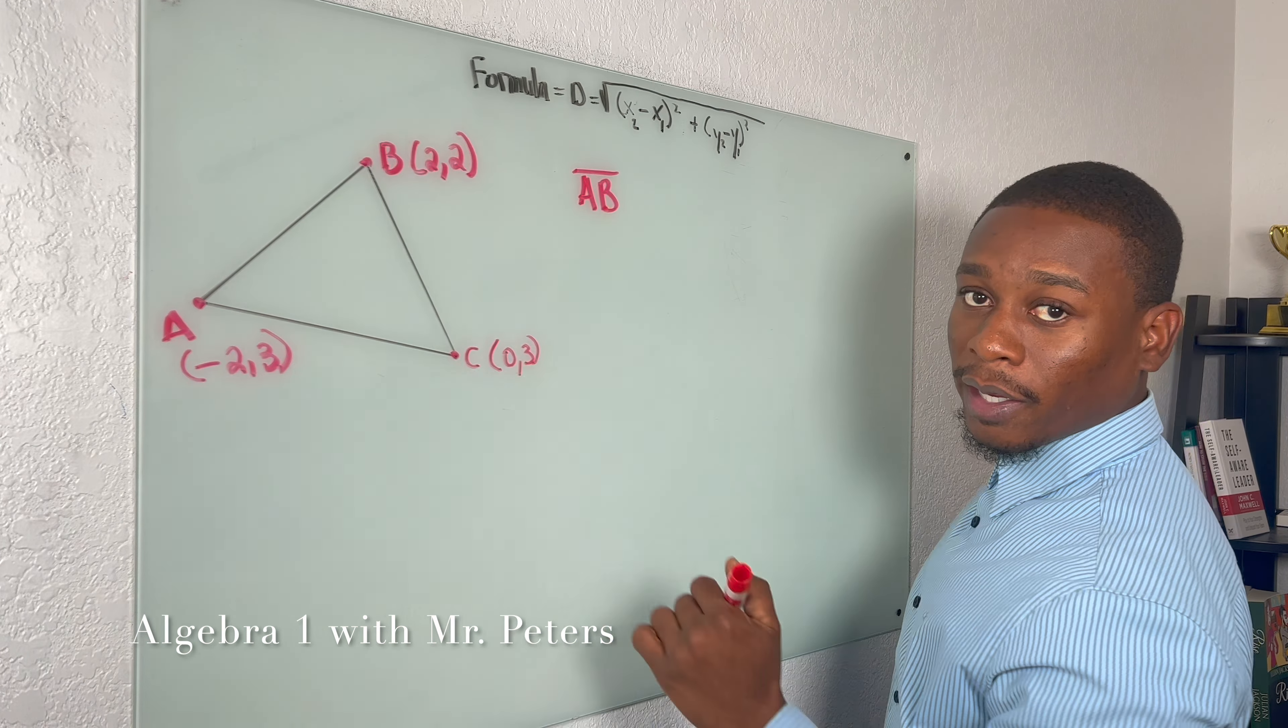So for x, we have (2 - 0)² plus (2 - (-3))². We know that's going to turn into addition. So what we have now is 2², which is 4, plus 5², which is 25. And our final answer is going to be the square root or radical 29. So that's B to C.